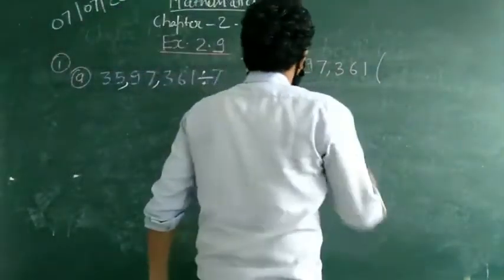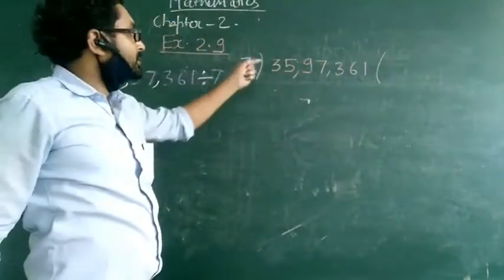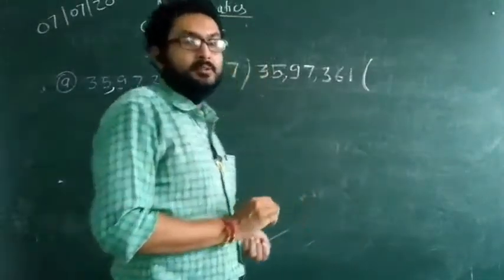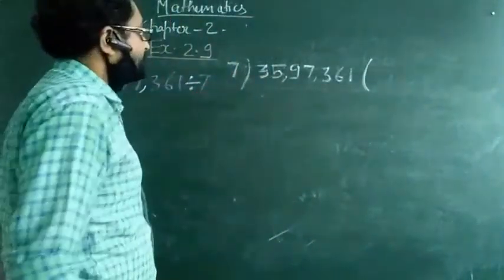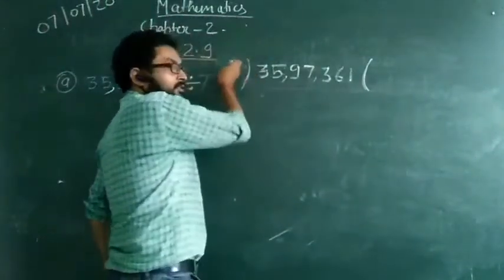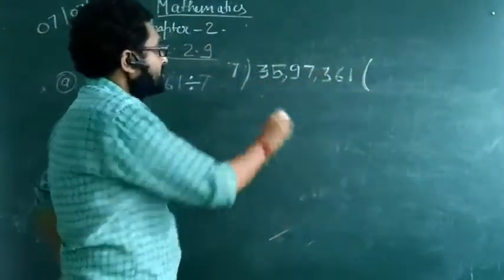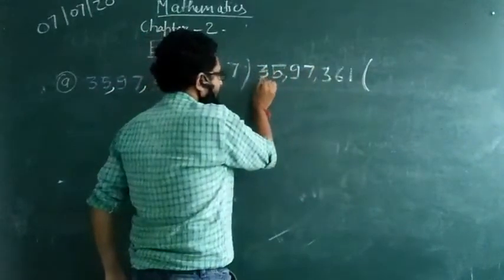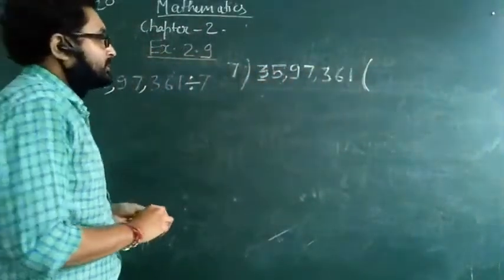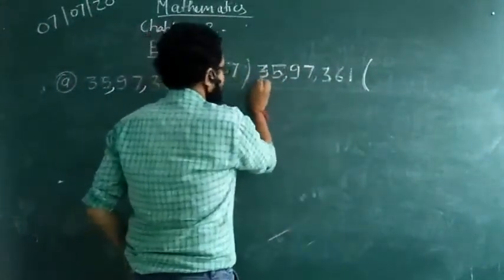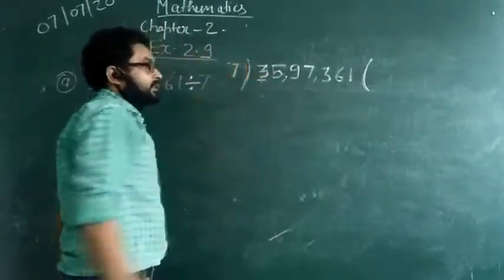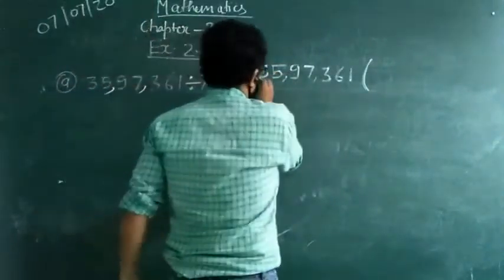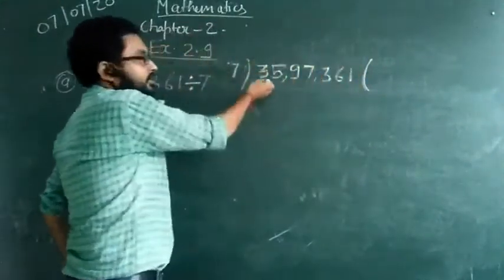First of all, I will remind you from our previous video — we will look at how to divide by 7. We will start with the first digit of the dividend. Whatever digits are in the dividend, we will see the first digit. Now, the first digit is smaller than 7, so we can't divide it. The dividend should be greater than the divisor to divide.